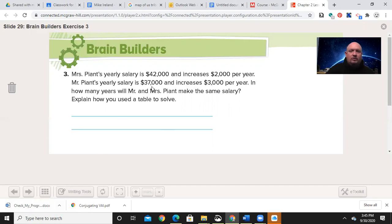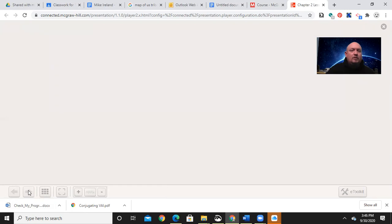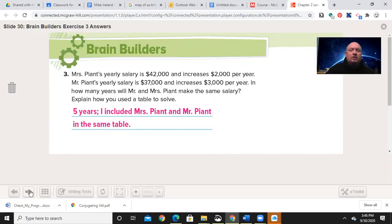Well, this one's a little trickier because you're going to have to make a chart with three lines. Year one where they're going to have 42 and 37. Year two, it's going to be 44 and 40. Year three, 46 and 43. The next year, it's going to be the same. So, five years. And that's having both of them on the same table.